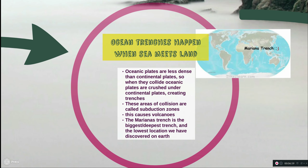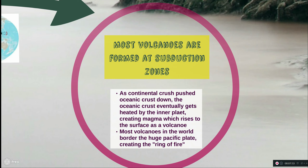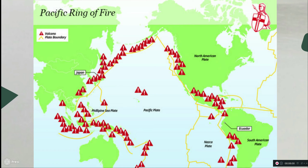Subduction zones can also cause volcanoes — they are typically the greatest source of volcanoes on our planet. The Pacific plate borders many continental plates, and these borders are largely subduction zones, which cause magma to rise to the surface as the oceanic plate is pushed down. The Pacific plate has so many volcanoes that the edges of it are nicknamed the Ring of Fire. Each triangle on this map is a volcano, representing the largest concentration of volcanoes in the world.